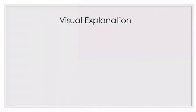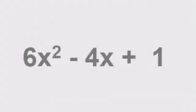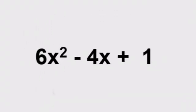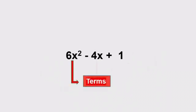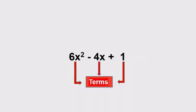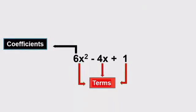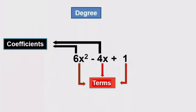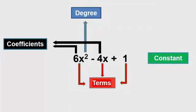Here is a visual representation for a better understanding. If 6x² minus 4x plus 1 is a polynomial, 6x² is one of the terms, minus 4x is another term, and 1 is another term. So the three terms are 6x², minus 4x, and 1. The coefficient of x² is 6 and the coefficient of x is minus 4. The highest power of the variable is 2, so 2 is the degree of the given polynomial.